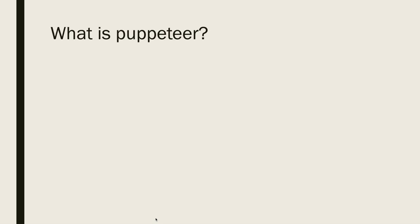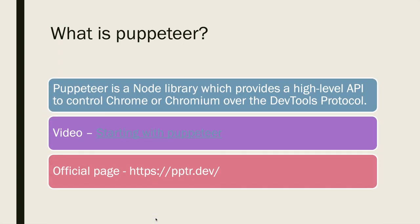So obviously the first question they ask is about what is Puppeteer — they basically want to check if you are familiar with it. You can give the definition from the official page: Puppeteer is a Node library which provides a high-level API to control Chrome or Chromium over the DevTools protocol. You can also mention that it currently supports Firefox as well.